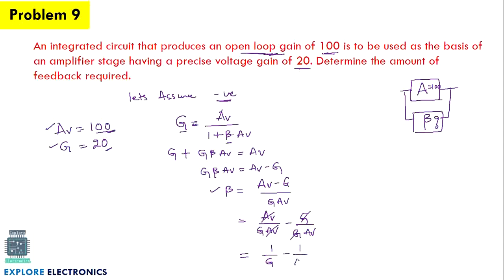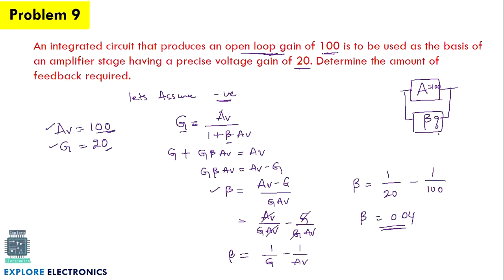The remaining expression is 1/G minus 1/Av. Substituting values: 1/20 minus 1/100, we get beta equals 0.04. So 0.04 is the feedback ratio required to achieve the precise gain of 20.